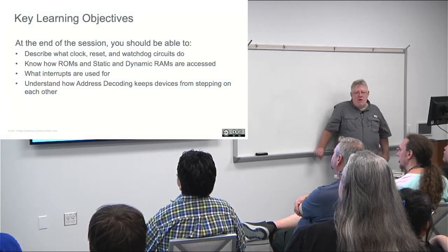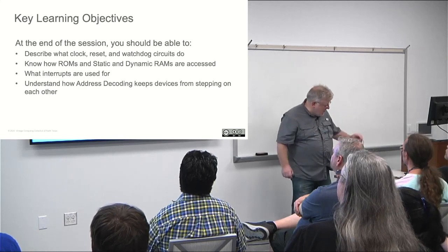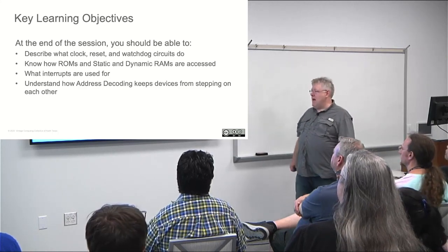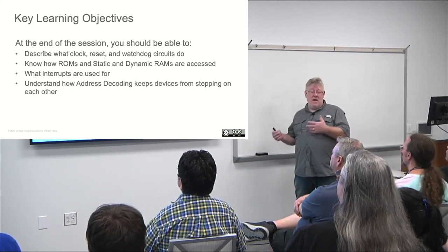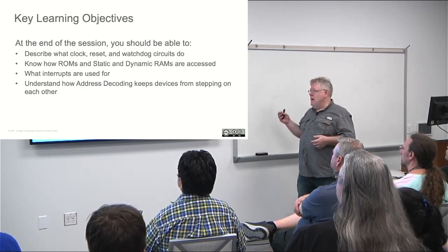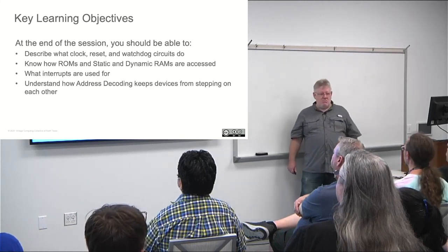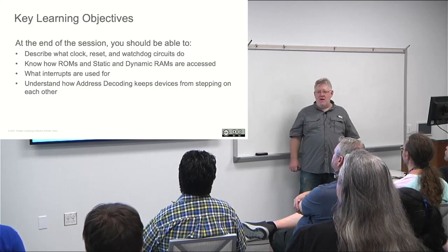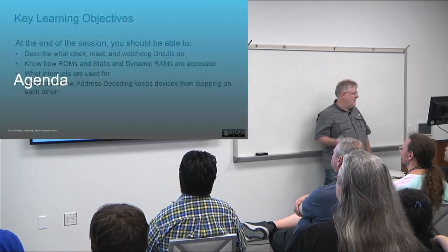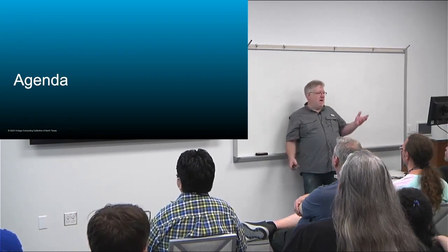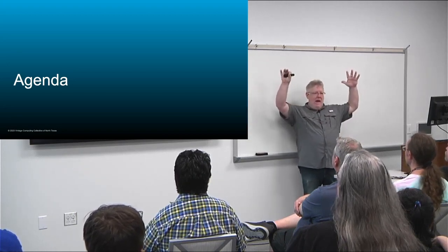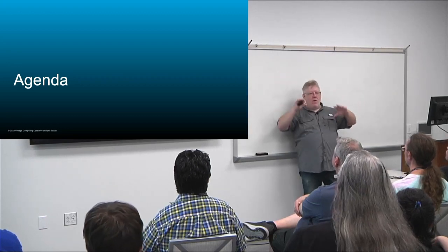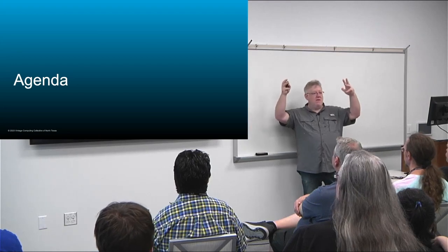So our key learning objectives. Describe what clock, resets, and watchdog circuits do. We're going to talk about address decoding. We're going to talk about how to access ROMs and RAMs and read them, write to the RAMs, and how dynamic RAMs are accessed. They're a bit different. They're a little weird. And then we're going to talk about interrupts. And then address decoding, because all these chips have the same address pins on them, from A0 on up, but they don't tie in the upper address line. So how do you tell one apart from another when you want to access them at different parts of memory?